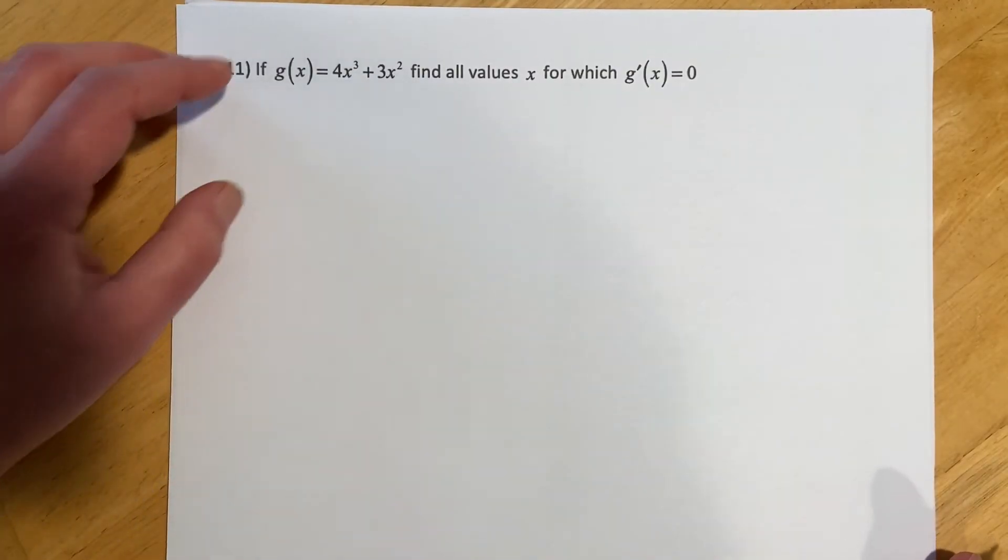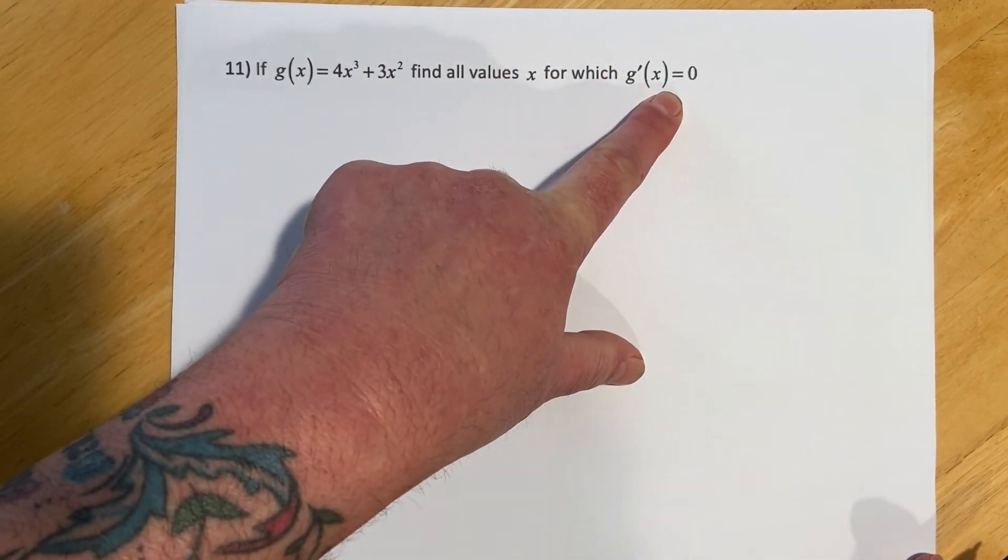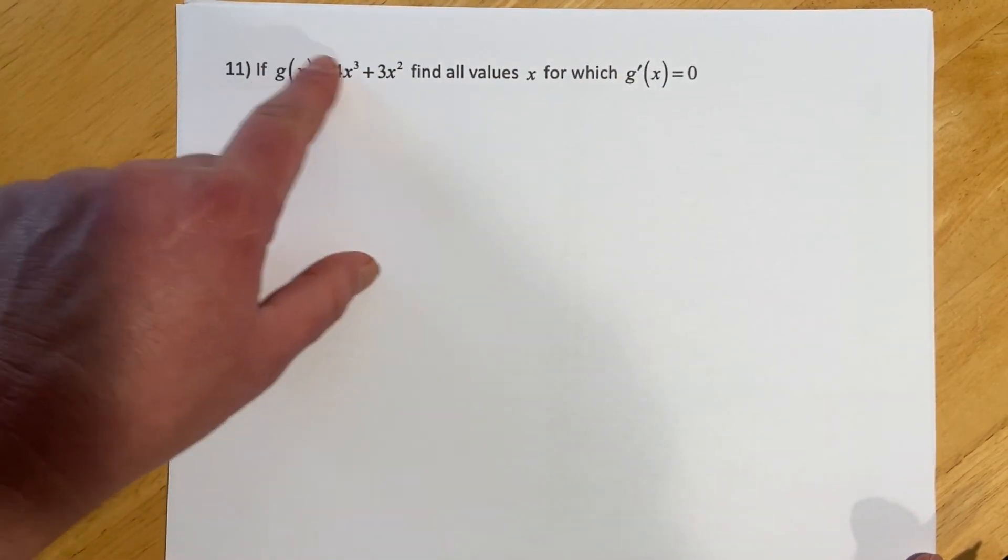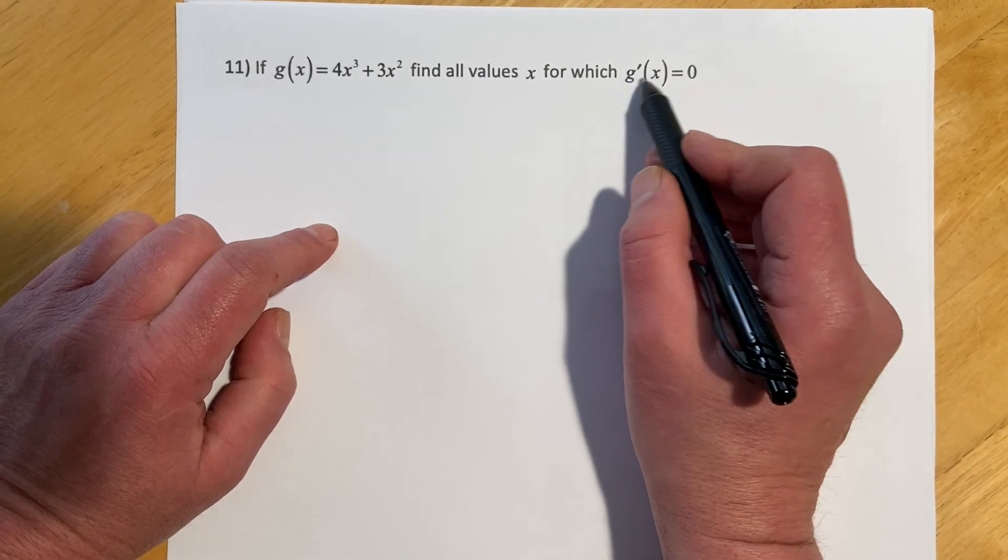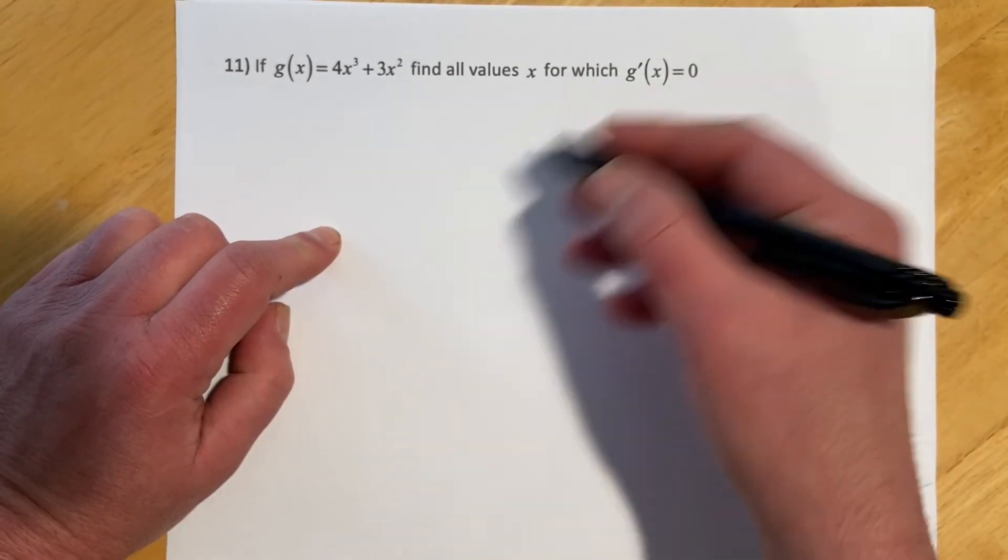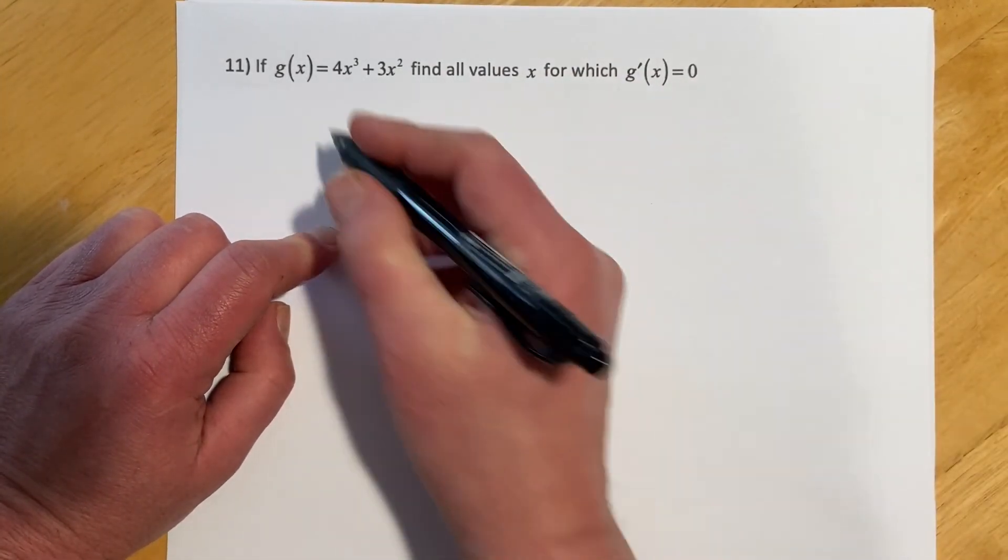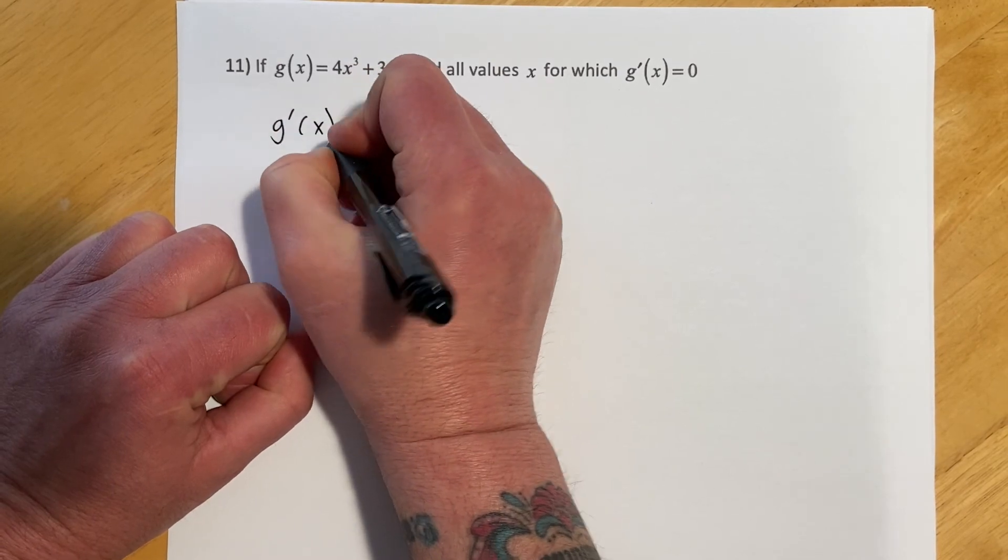And this one is, if g of x equals this function, find all values x for which g prime of x equals 0. So again, we're just going to take, so notice this isn't g prime of 0, this is saying set the function to 0, solve for the x's. So if it was g of 0, we're plugging in 0, but this is saying find where it is 0.